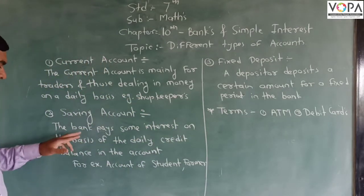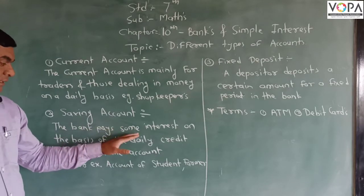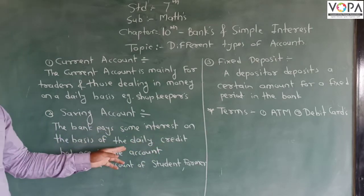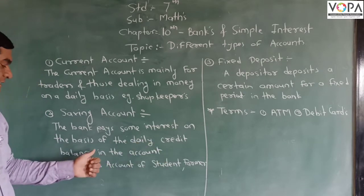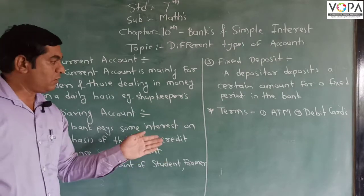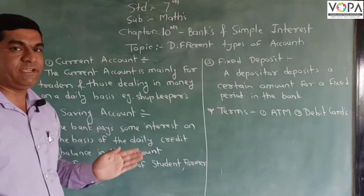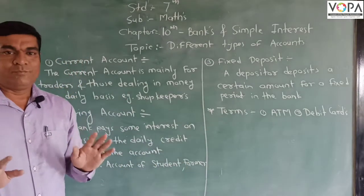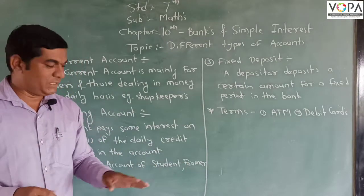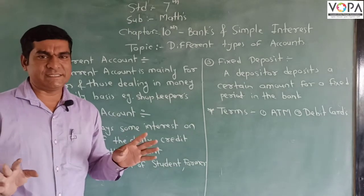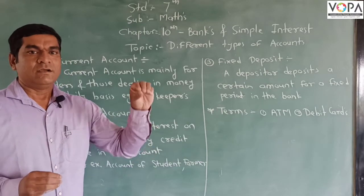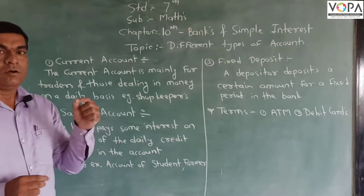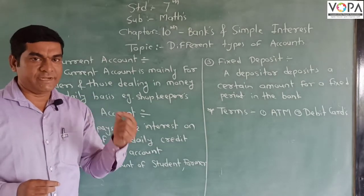The next type of account is the saving account. The bank pays some interest on the basis of the daily credit balance in the account — this is called a saving account. The saving account is opened by general people, farmers, students, and others. They save money in the bank and the bank gives some interest on that particular money.